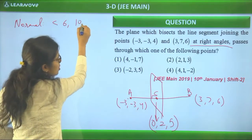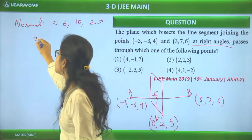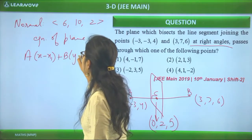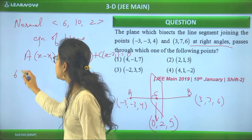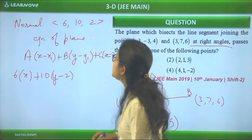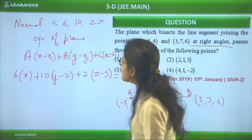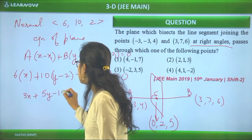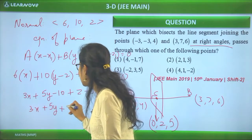The midpoint of the segment is (0, 2, 5). The direction ratios of AB are (3-(-3), 7-(-3), 6-4) = (6, 10, 2). Using these as normal DRs and the midpoint as the point, the plane equation becomes: 6(x - 0) + 10(y - 2) + 2(z - 5) = 0, which simplifies to 3x + 5y + z = 15.